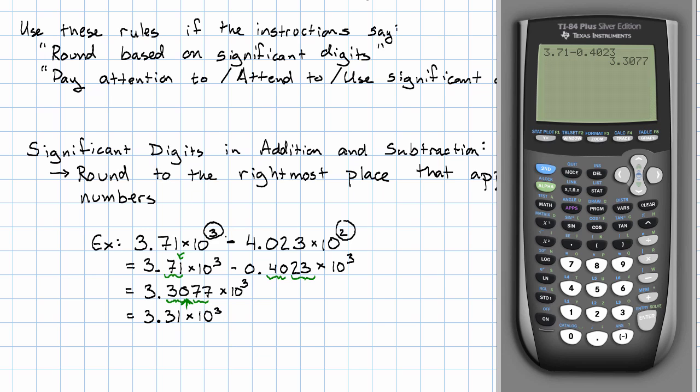The rightmost place that appears in both numbers then, that's just this hundredths place in something multiplied by 10³. So that's the harder of the two rules.